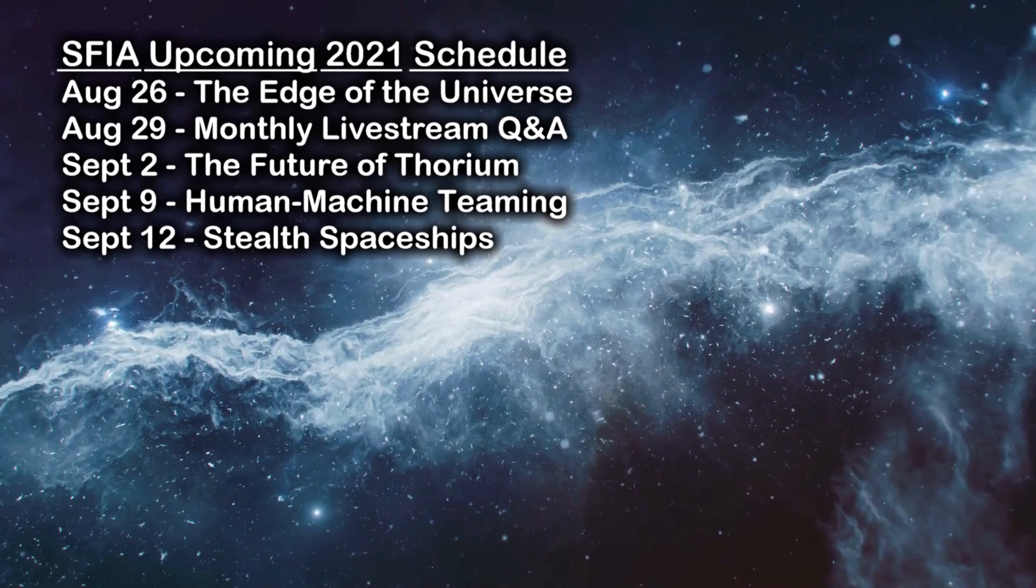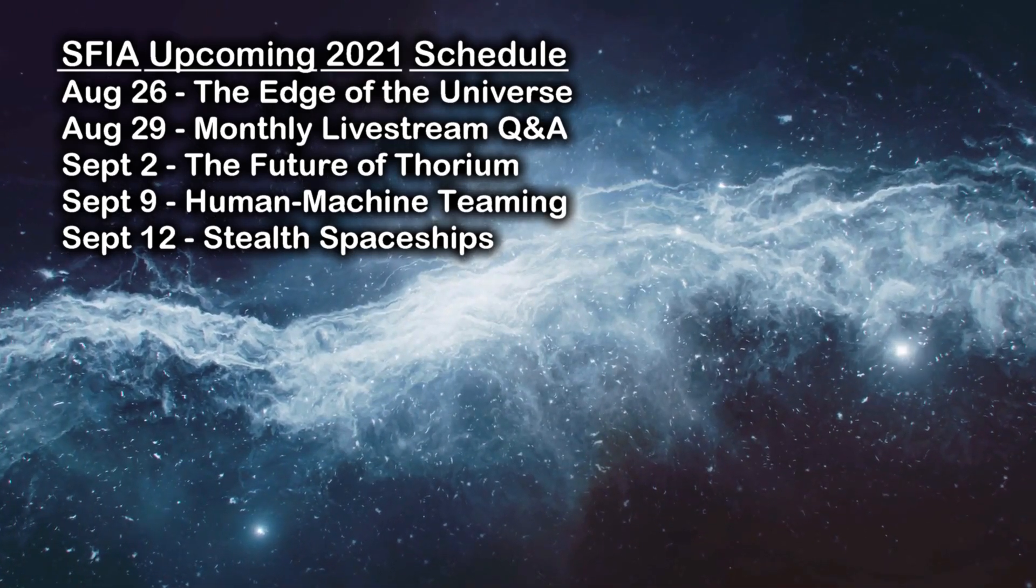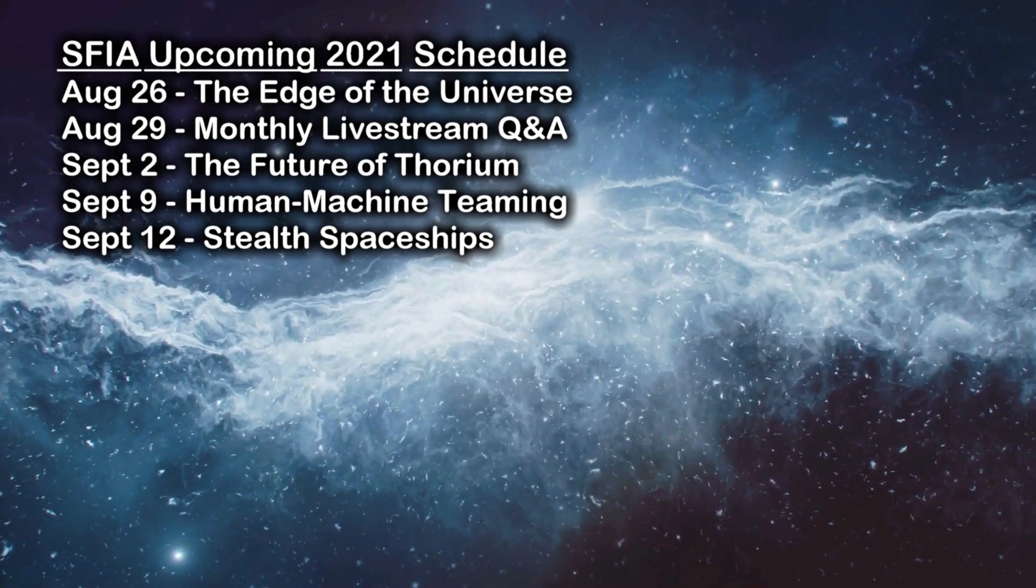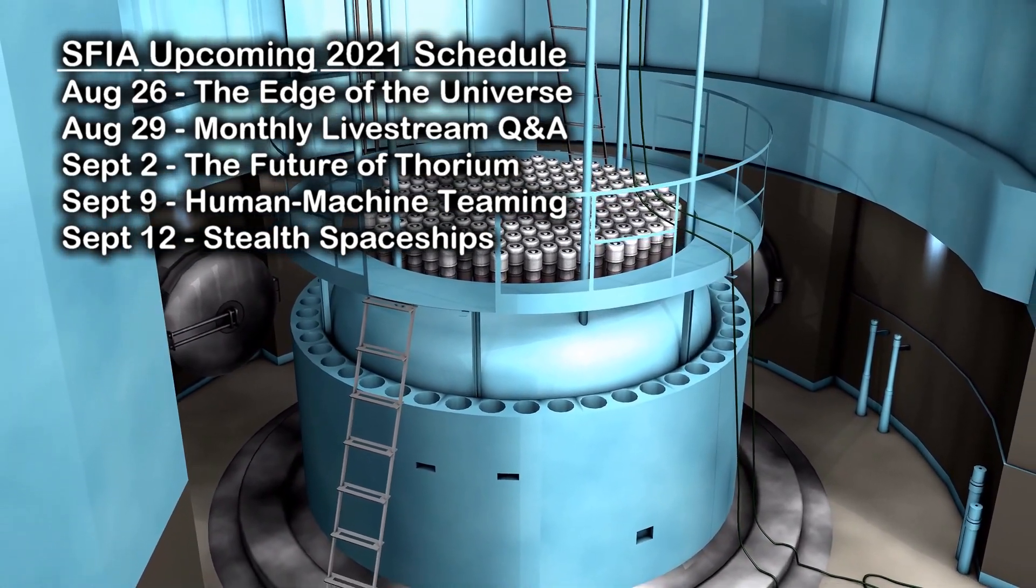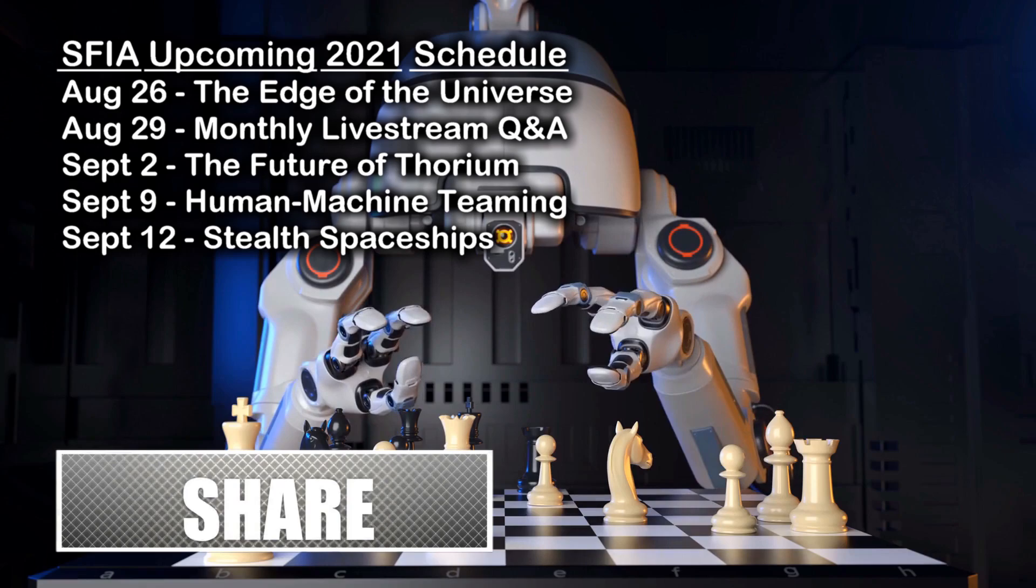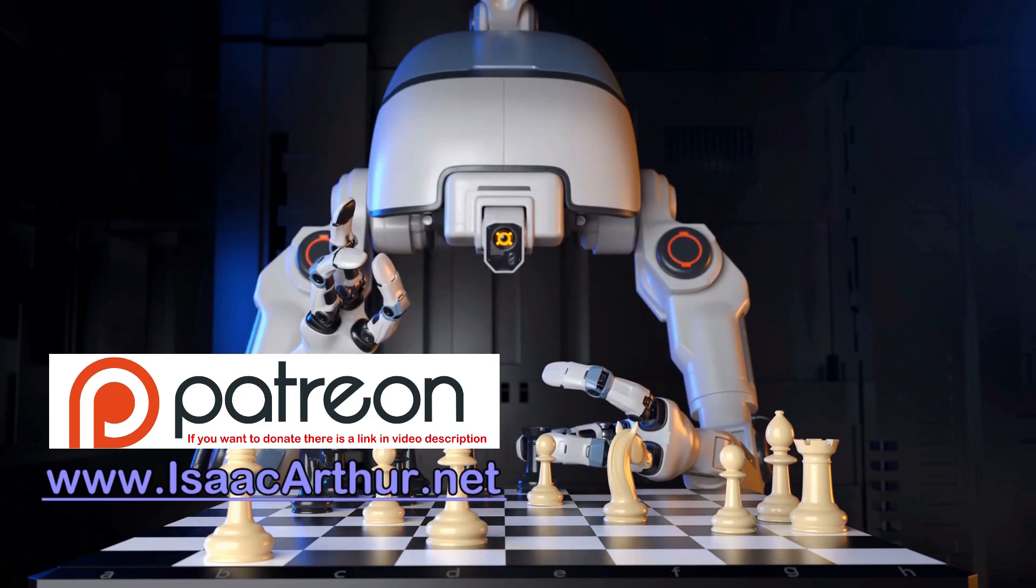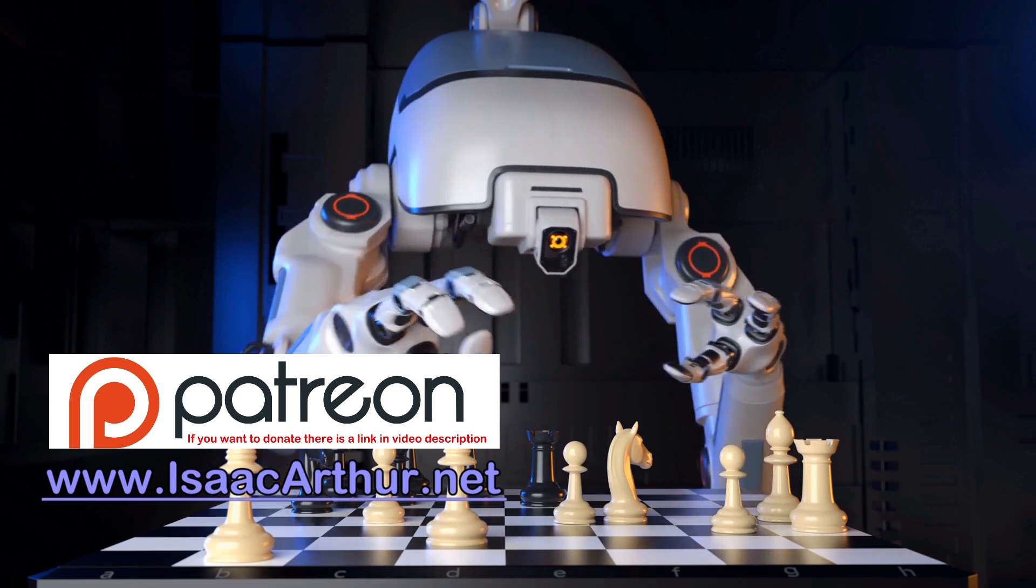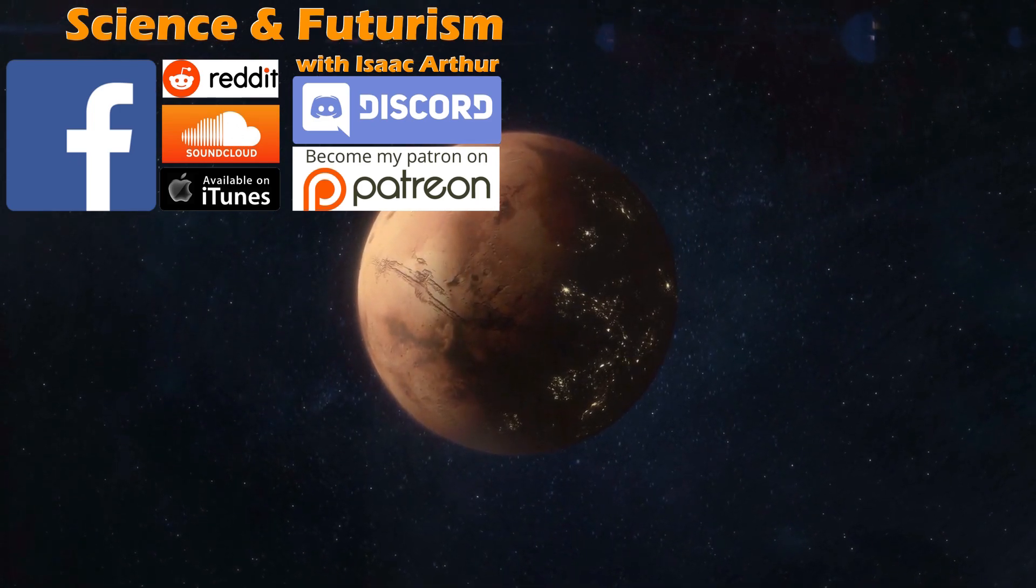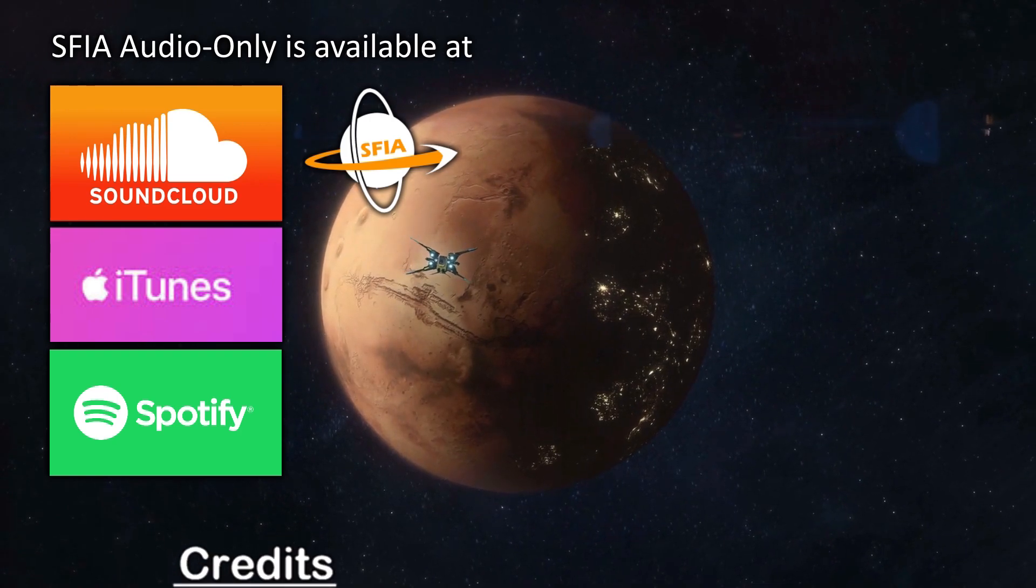So this wraps us up for today but we'll be back next week for a look at the Edge of the Universe, on Thursday, August 26th. Then we'll have our monthly livestream Q&A on Sunday, August 29th at 4pm Eastern Time. That will finish us for August but we'll leap right into September, with a look at the Future of Thorium on September 2nd, and Human Machine Teaming on September 9th. If you want alerts when those and other episodes come out, make sure to subscribe to the channel, and if you'd like to help support future episodes you can donate to us on Patreon or on our website, IsaacArthur.net, which are linked in the episode description below, along with all of our various social media forums where you can get updates and chat with others about the concepts in the episodes and many other futuristic ideas. You can also follow us on iTunes, SoundCloud, or Spotify to get our audio-only versions of the show. Until next time, thanks for watching, and have a great week.